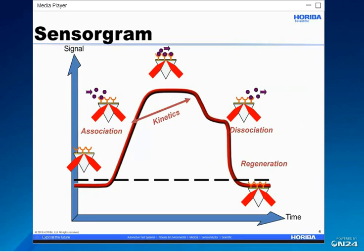During an SPR experiment, one of the interactants is immobilized to the sensor surface, while the other is free in solution and passed over the surface. Association and dissociation is measured in arbitrary units and displayed in a graph called the sensorgram. Biomolecular interaction analysis is not limited to proteins — you can measure DNA-DNA interactions, DNA-protein, lipid-protein, and hybrid systems of biomolecules and non-biological sensitive surfaces can also be investigated.